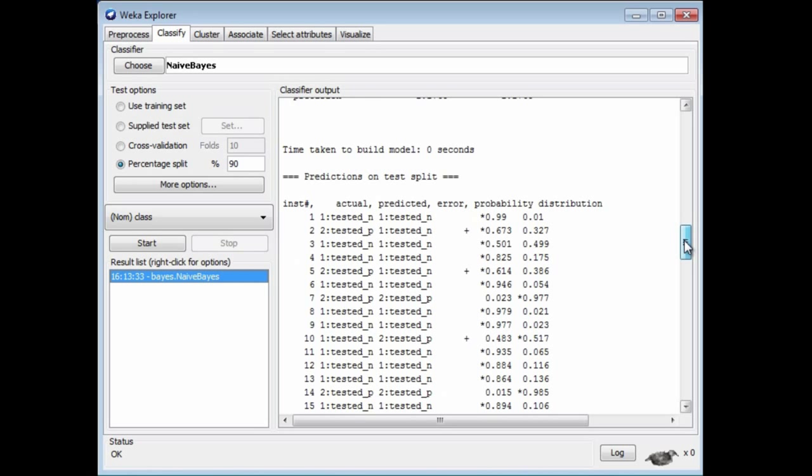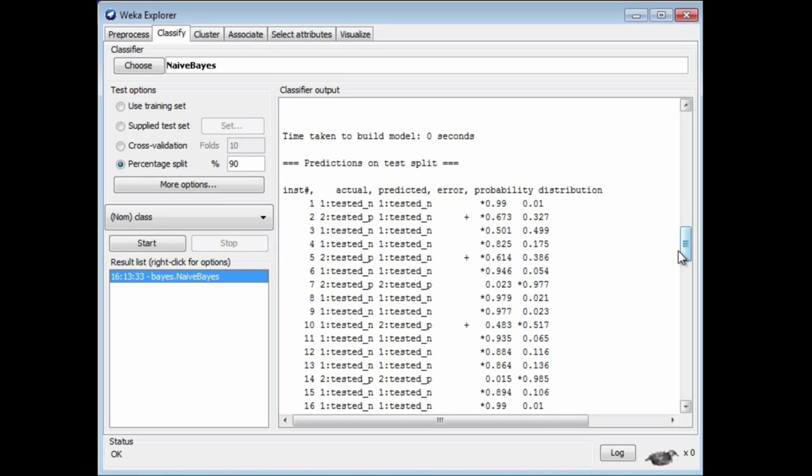This is a two-class dataset. The classes are tested_negative and tested_positive. These are the instances: number one, number two, number three. This is the actual class: tested_negative, tested_positive, tested_negative. This is the predicted class: tested_positive, tested_negative, tested_negative. This is a plus under the error column to say where there's an error, so there's an error with instance number two.